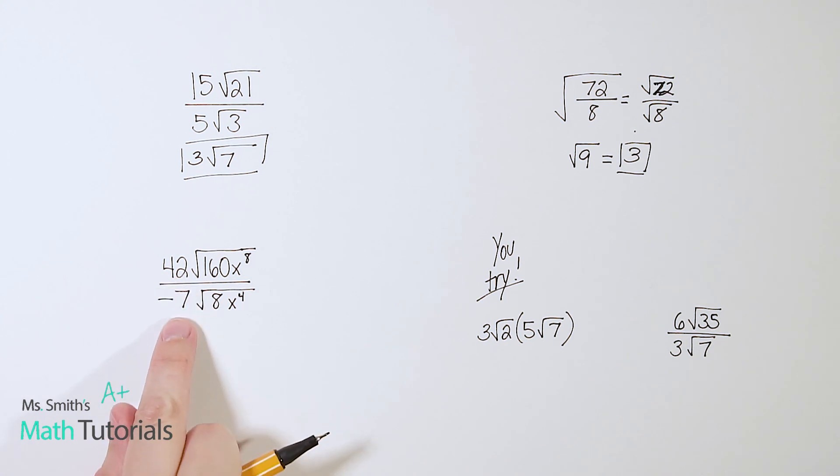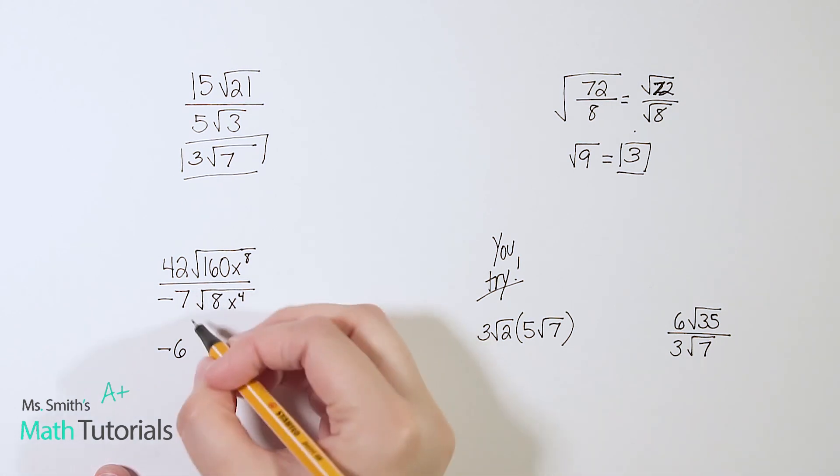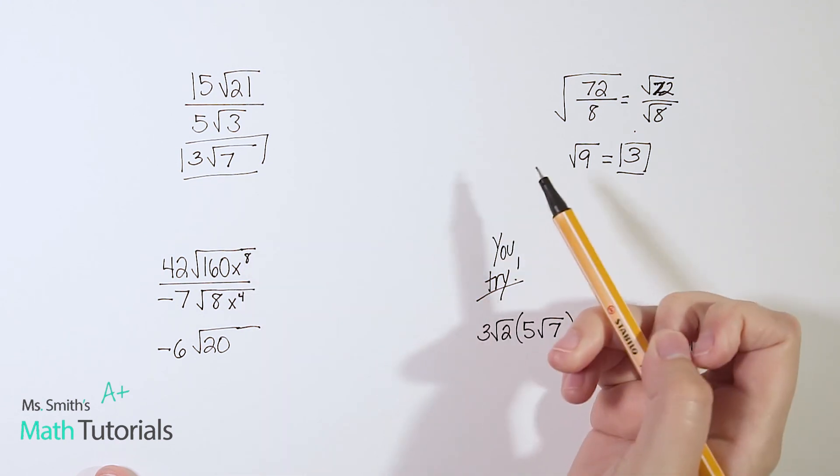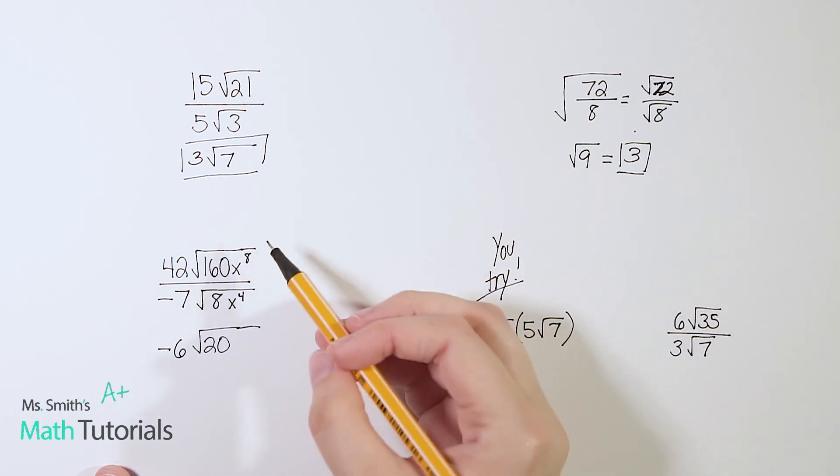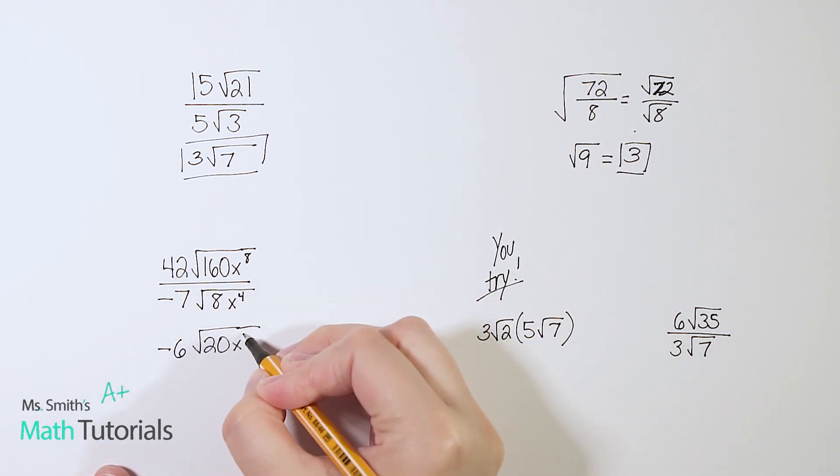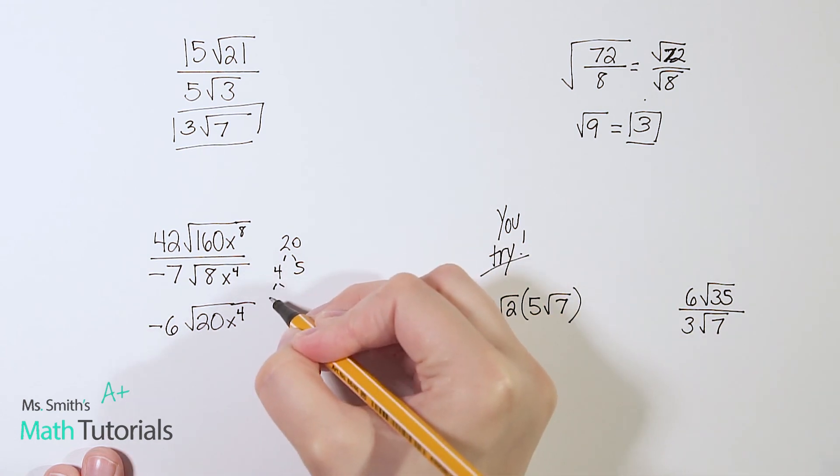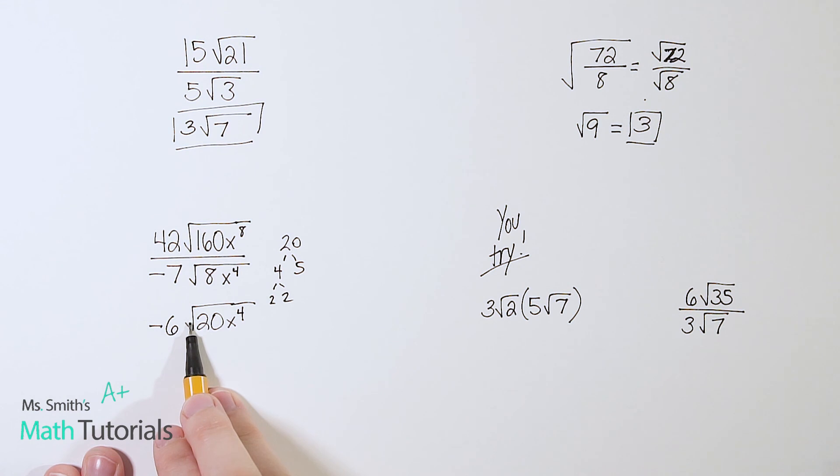All right, coming down here, 42 divided by negative 7, that's going to be a negative 6 on the outside. It's okay that it's negative. And then 160 divided by 8, that's going to give me 20. So I've got square root of 20. Now I've got to remember my exponent laws here because I've got x to the eighth power divided by x to the fourth power. And remember when we're dividing with exponents, we subtract the exponents. So that's kind of far reaching way back. But 8 minus 4 is x to the fourth. 8 minus 4 is 4. And then of course I want to simplify this if I can. And I know I can simplify 20. So let's think, what are two things that go into 20? I think 4 and 5, and then 2 and 2.